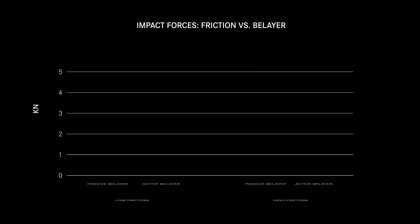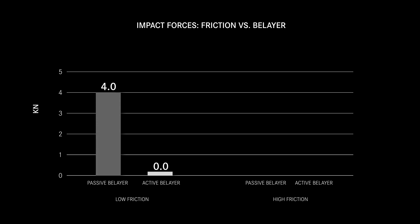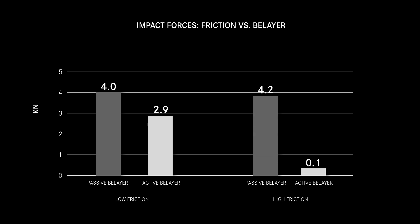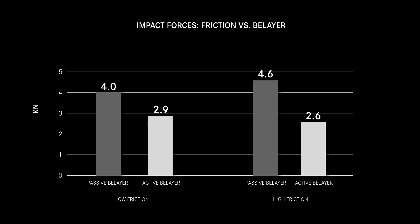Now we can compare our impact values. We compare the setups of low friction passive and active behavior with the forces of high friction passive and active behavior. It shows that with passive behavior, the forces between high and low friction only change by 0.5 kN.